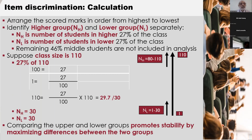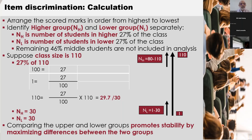Then we identify the higher group and the lower group. The higher group means 27% of the students on the upper side, and the lower group means 27% from the bottom. So 27% from the top makes the higher group and 27% from the bottom makes the lower group. The remaining 46% of middle students are not included in this analysis. Taking the example of 110 students, 27% would make roughly 30 students.